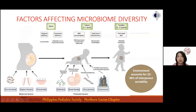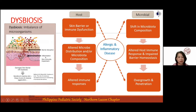After puberty, the microbiome shifts towards an adult-like configuration. When there is an imbalance of microorganisms, this is termed dysbiosis, which ultimately leads to inflammatory and allergic disease expression.